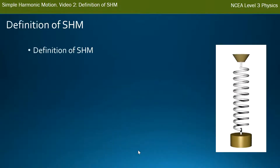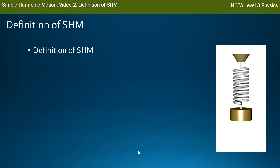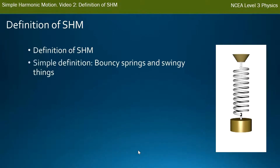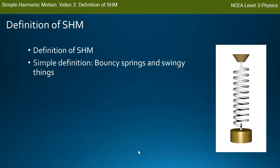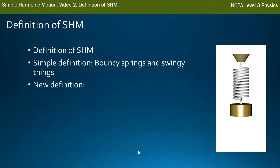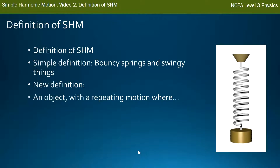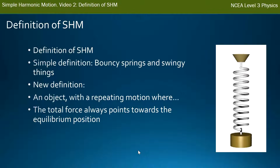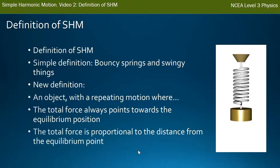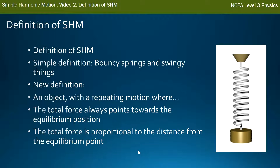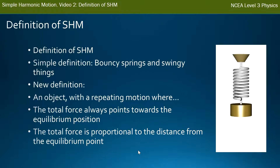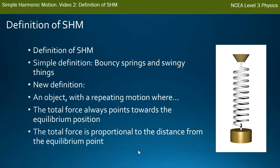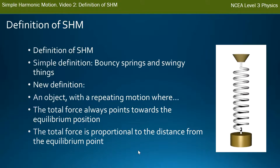From these force diagrams we can adjust our definition of simple harmonic motion to be more precise. In the first video we described it loosely as bouncy springs or swingy things. Our new definition is: an object undergoing repeating motion where the total force always points towards the equilibrium position, and the total force is proportional to the distance from the equilibrium point — the further from the dashed line, the bigger the force; the closer to it, the smaller the force.